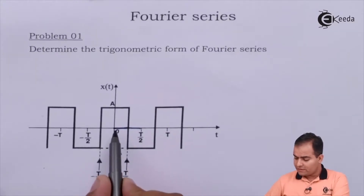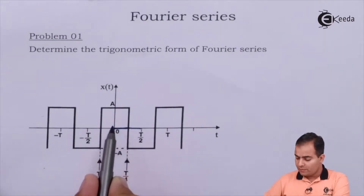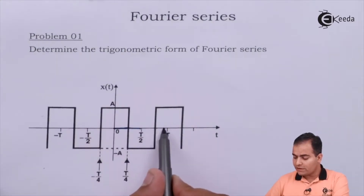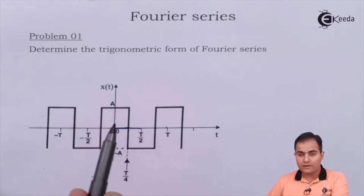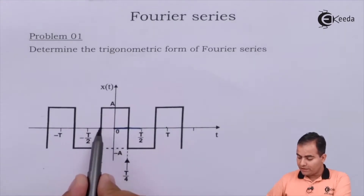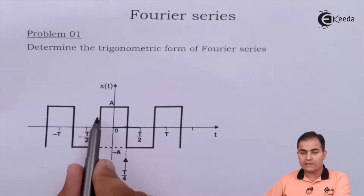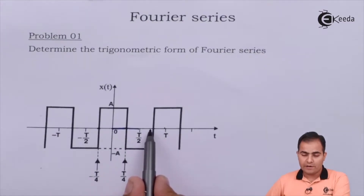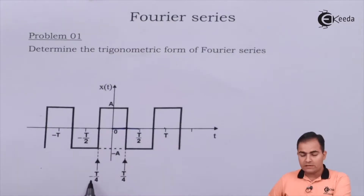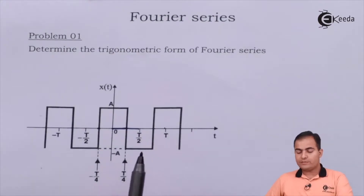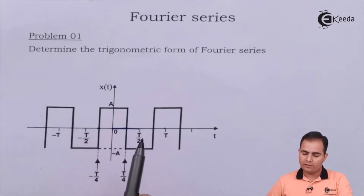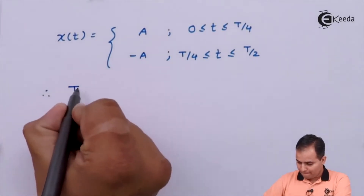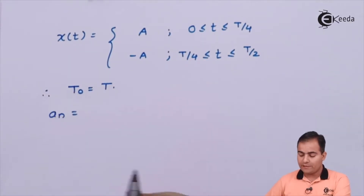If the graph starts from 0, we have one-fourth of a positive cycle. The next positive cycle completes at T, so the total time period of x(t) is T. Alternatively, the first half of the positive cycle starts at minus T/4 and completes at T/4; the negative half cycle runs from T/4 to 3T/4. So 3T/4 minus T/4 equals T/2, confirming the total time period is T.